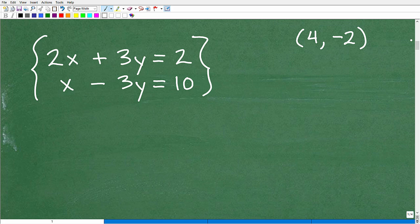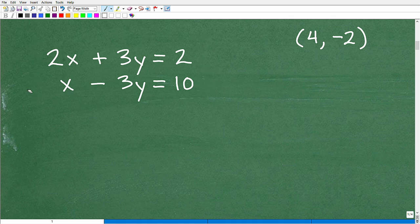Let's look at this system. We're going to solve this using the substitution method. Let me get rid of these brackets. We have two equations: 2x + 3y = 2 and x - 3y = 10. This is actually the answer: (4, -2). This is the coordinate, the point where these two lines would intersect on the x, y plane. So x is 4 and y is -2. Let's look at this system and think what would be the best way to go.